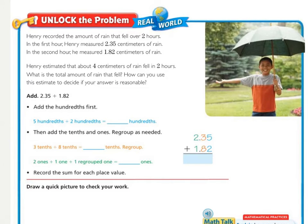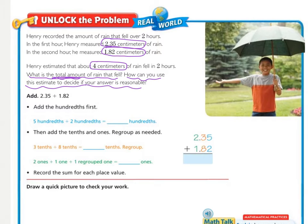You need to underline what you're being asked to find, and in this case there are two things you're being asked to find. Circle the important information, and then also underline any other important mathematical terms to help you know which operations to perform. You should have squiggle underlined two different questions: the first one is what is the total amount of rain that fell, and the second one is how can you use this estimate to decide if your answer is reasonable. So we need to know that the numbers we'll be working with are 2 and 35 hundredths centimeters and 1 and 82 hundredths centimeters. I also circled the label so I knew what label to use at the end when I write my answer.